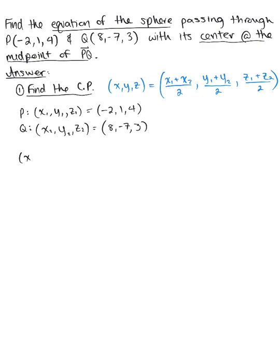Plugging these points in, we have (x, y, z) equals negative 2 plus 8 divided by 2, 1 minus 7 divided by 2, and then 4 plus 3 divided by 2.